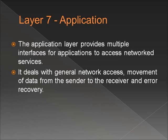Layer 7, the application layer, provides ways for applications to access network services such as network file transfer, message handling, and database query processing. It controls error recovery, data movement from sender to receiver, and general network access. Often, the application layer uses both a client component and a server component. One example would be using a web browser to access a web server, of which both components would use HTTP, or hypertext transfer protocol.